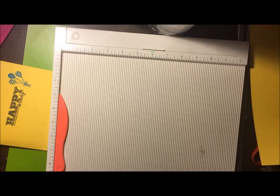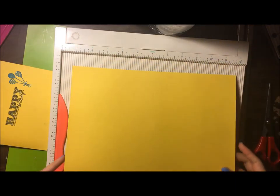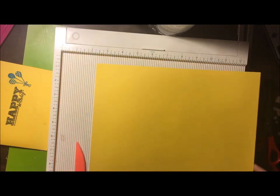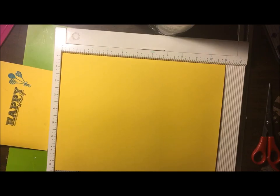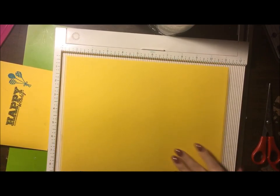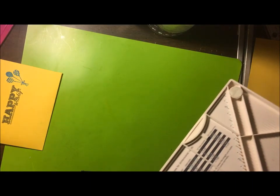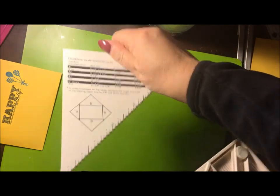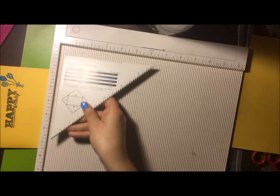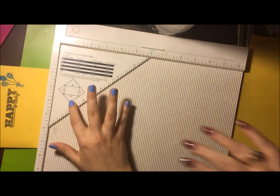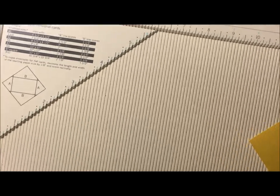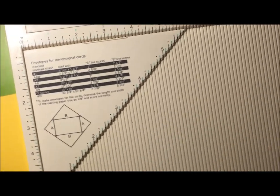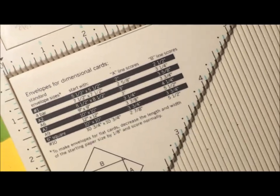So we're going to start out with a regular 8 1/2 by 11 sheet of cardstock. Nothing special about it. This is the scoring board here, the Martha Stewart scoring board. This is a large one. You're going to put that up in the corner. Make sure it's flush in the corner, not pulled over or anything.